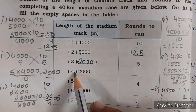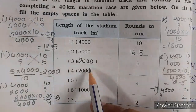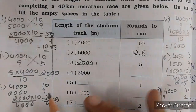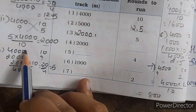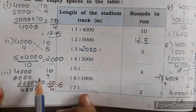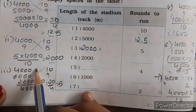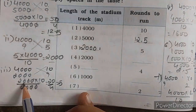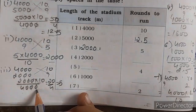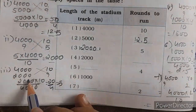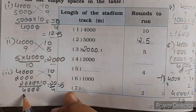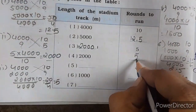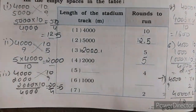Next question mein 2000 already diya gaya hai. Same humne abhi solve kiya na — 2000 ke liye 5 rounds lagane hain. To yahan aapko solve karne ki zaroorat hi nahi hai, lekin phir bhi: 4000 ke liye 10 rounds hain, to 2000 ke liye kitne? Cross multiplication — 2000 into 10 divided by 4000 — zeroes cut, 20 by 4 equals 5. So yahan kitne rounds aengi — 5.